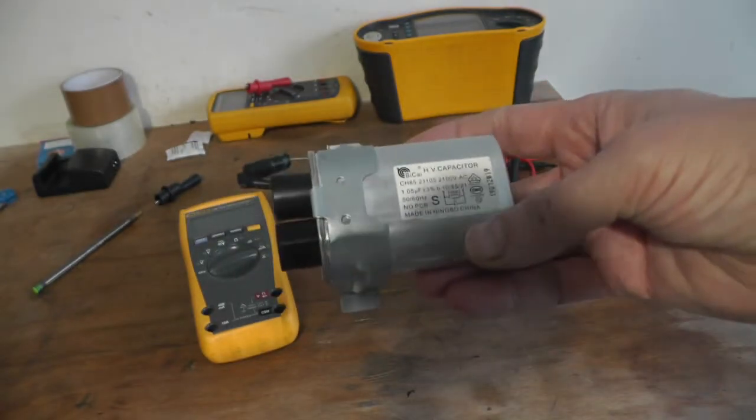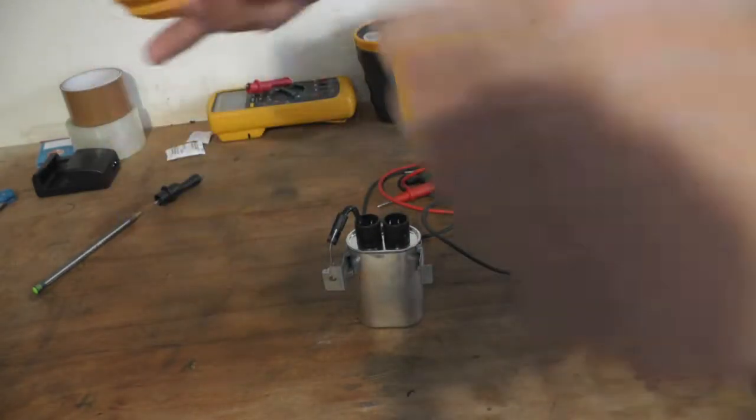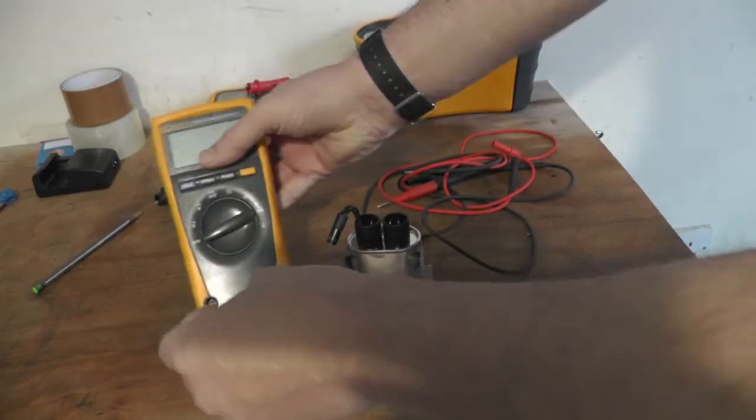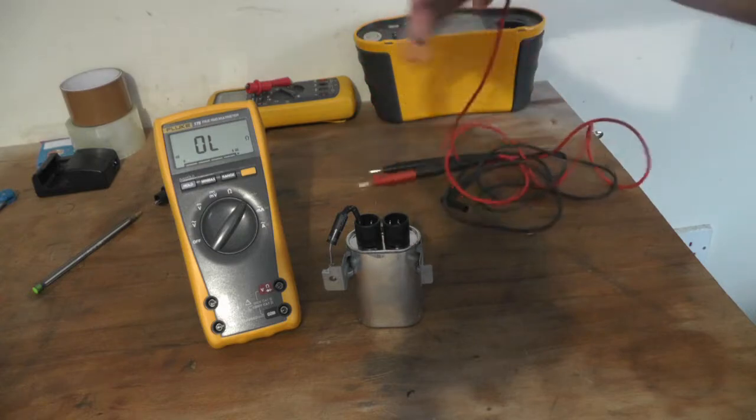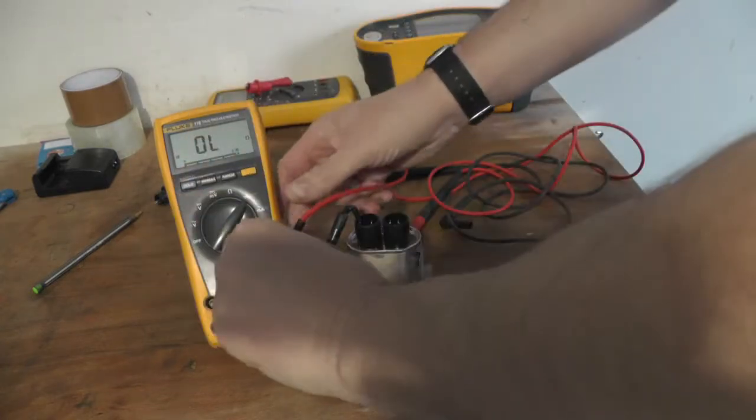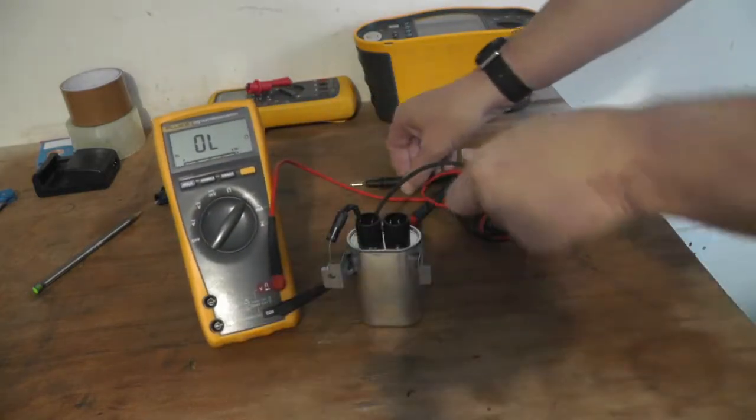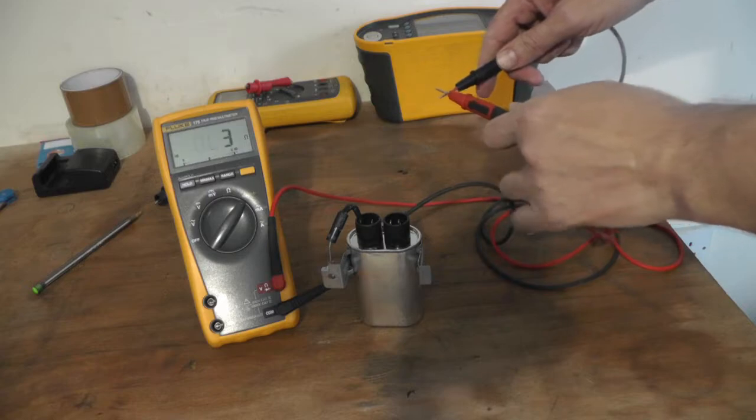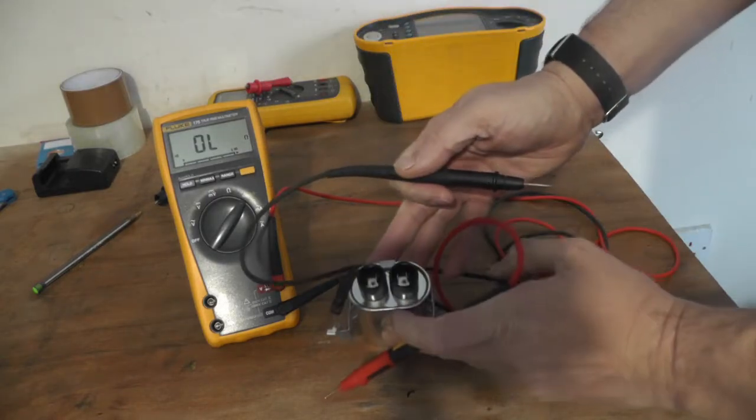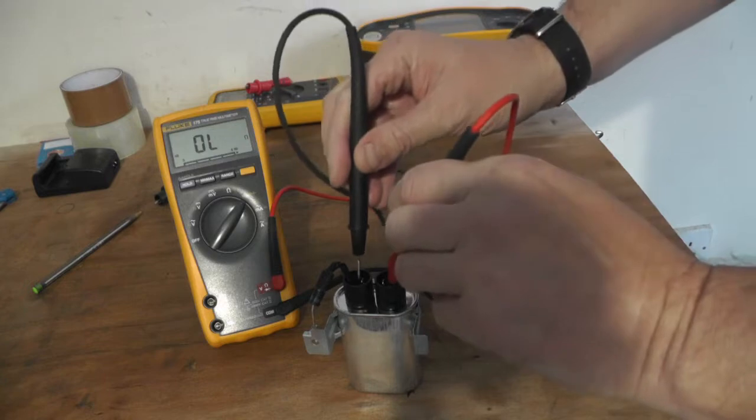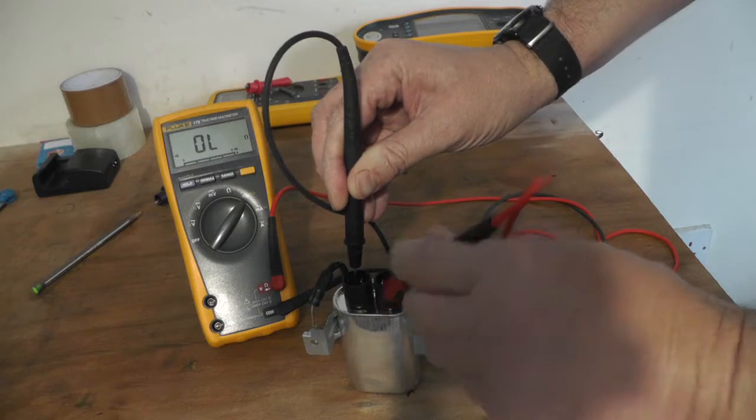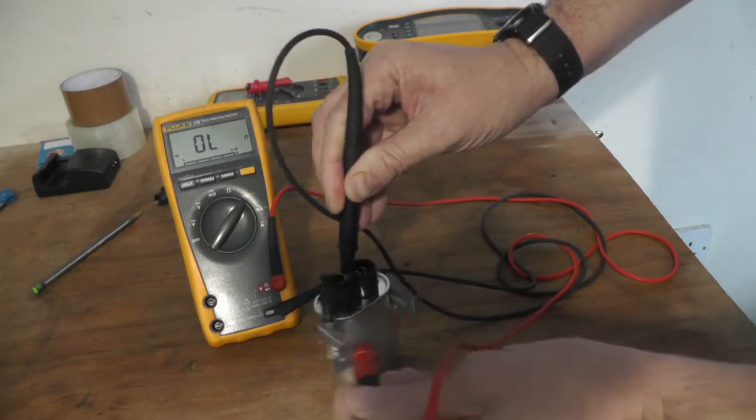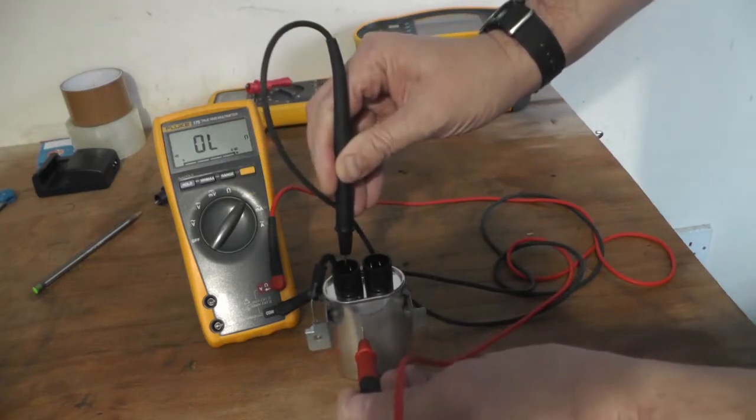So I'm going to test it first on continuity. Set the continuity on the buzzer, make sure it works, then test between each of the two terminals on the top. You should be getting nothing, and nothing to earth neither, or nothing to the body of the unit. If there's any leakage, then it's faulty.